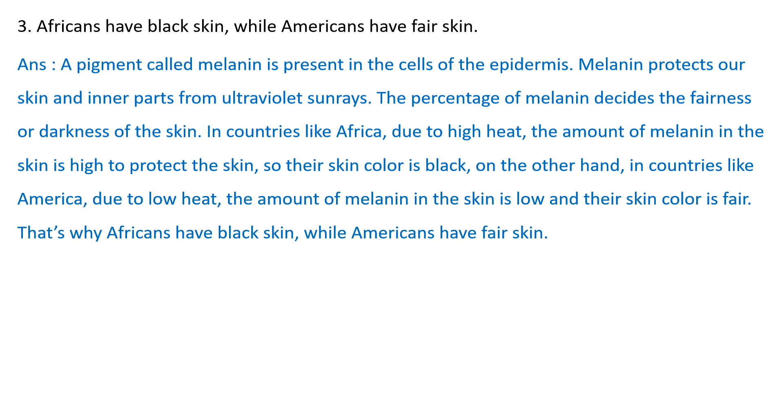Third: A pigment called melanin is present in the cells of the epidermis. Melanin protects our skin and inner parts from ultraviolet sun rays. The percentage of melanin decides the fairness or darkness of the skin. In countries like Africa, due to the high heat, the amount of melanin in the skin is high to protect the skin, so their skin color is black. On the other hand, in countries like America, due to low heat, the amount of melanin in the skin is low and their skin color is fair.